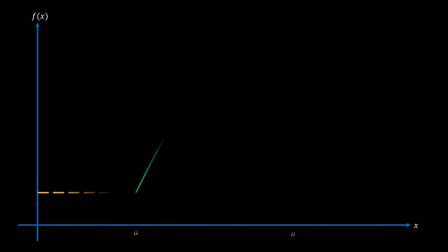So what exactly is Rolle's theorem trying to tell us? Well, if we have a function where the endpoints over an interval are equal, it is continuous over this interval, and it is differentiable across the whole interval, then there must be a point, which we can call c, where the derivative of this point must equal zero.